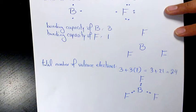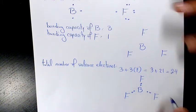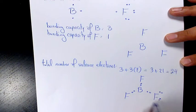Then I need to place pairs of the remaining valence electrons as lone pairs on the surrounding atoms, not on the central atom, only on the surrounding atoms. So one, two, three, four, five, six on each fluorine.